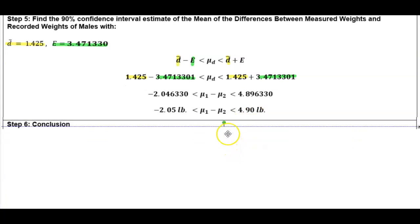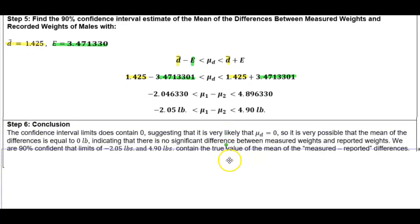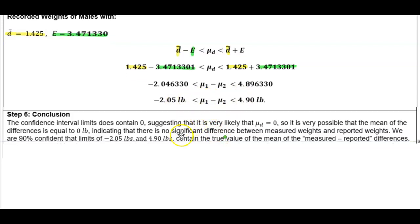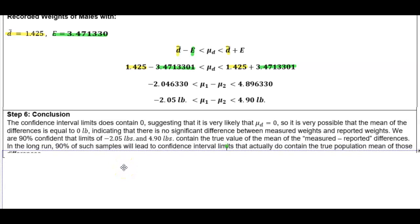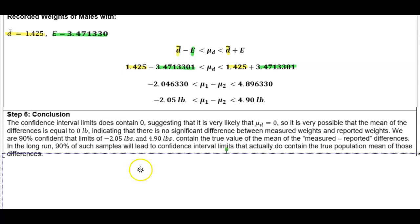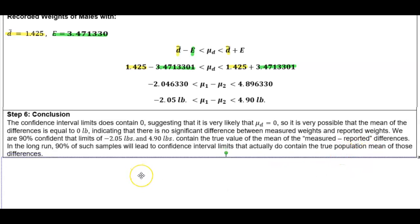Now we state the conclusion. The confidence interval limits do contain zero, which is the mean difference. Because zero is between those two numbers, it suggests it is very likely that the population mean of the difference equals zero. So it is very possible that the mean of the differences is zero pounds, indicating no sufficient difference between measured and reported weights. Therefore, we are 90% confident that the limits of negative 2.05 pounds and 4.90 pounds contain the true value of the mean of the measured minus reported differences. In the long run, 90% of such samples will lead to confidence interval limits that actually contain the true population mean of those differences.